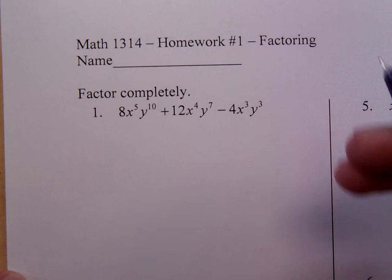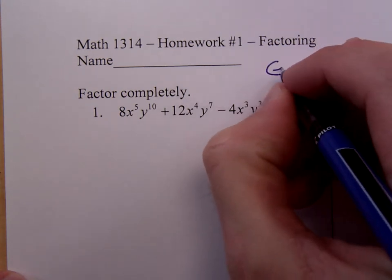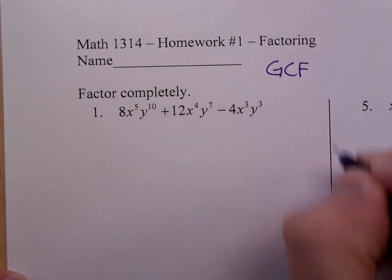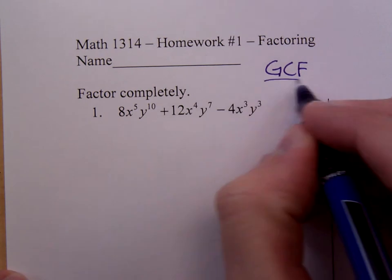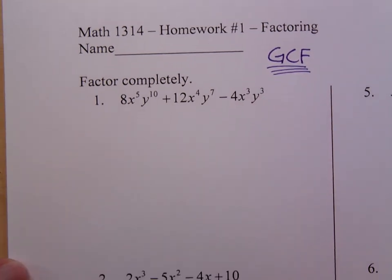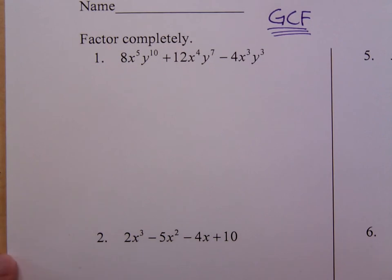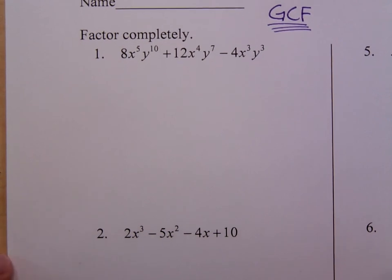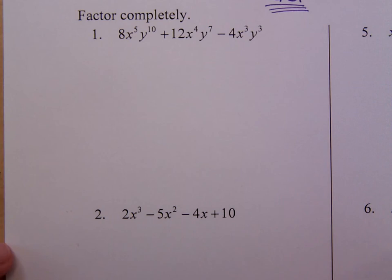Now one of the first things you must always remember whenever you're factoring is you always look for the GCF. Always look for the greatest common factor. It doesn't matter what you're doing. When you're trying to factor, you always try to factor that out first. If there is something other than 1. I mean everything can have a common factor of 1 but that doesn't really help us out.